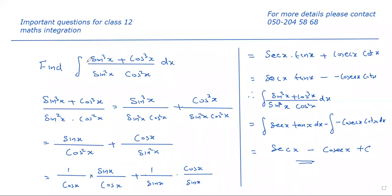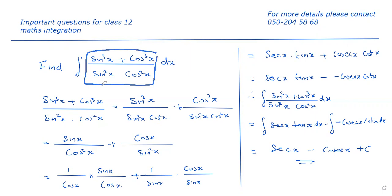The question is: find the integral of sin³x + cos³x divided by sin²x · cos²x dx. To integrate this function, we can simplify sin³x + cos³x divided by sin²x · cos²x.